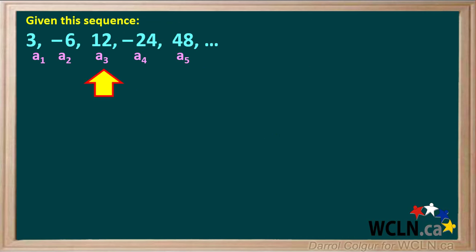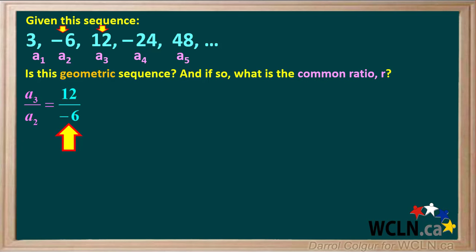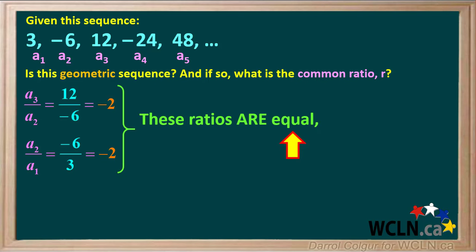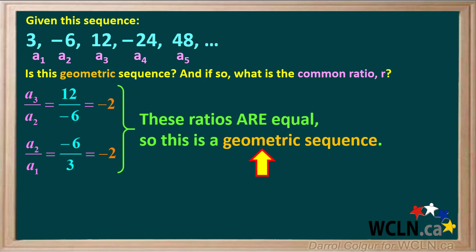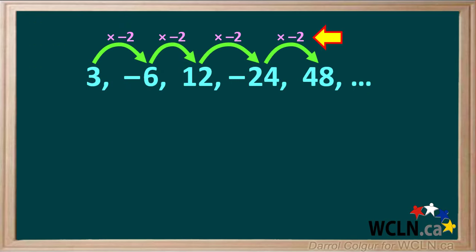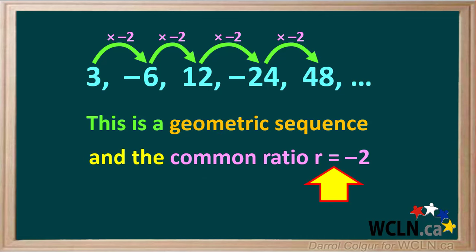Let's do another example. We're given this sequence and we're asked if it's a geometric sequence, and if so, what is the common ratio r? We start by finding the ratio of term 3 to term 2, which is 12 divided by negative 6, or negative 2. Now we'll take the ratio of term 2 to term 1, which is negative 6 divided by 3, which is also equal to negative 2. Therefore, the ratio of term 3 to term 2 equals the ratio of term 2 to term 1, so this is a geometric sequence and the common ratio r is equal to negative 2.